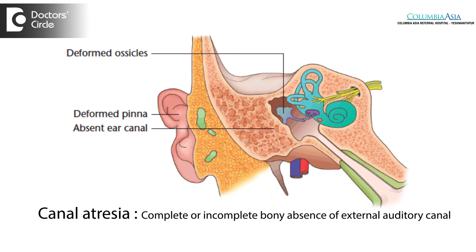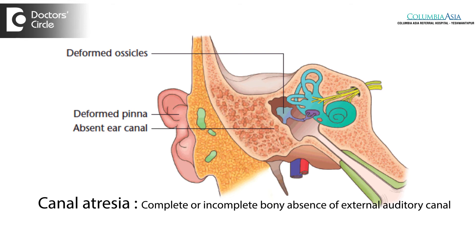Very rarely, some children can have congenital problems wherein the canal may not differentiate during the fetus growing in the womb. This is called canal atresia, meaning the canal doesn't form at all, which also contributes to a certain amount of conductive hearing loss.